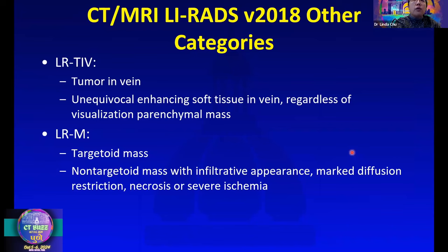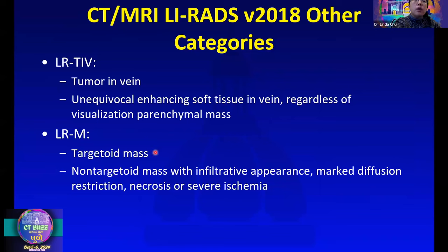There are also special categories in LIRADS 2018, including LR-TIV, which means tumor in vein. That refers to unequivocal enhancing soft tissue in the vein, regardless of whether we can see a parenchymal mass. There is also the LR-M category, which is suspicious for metastatic disease, and these can look like the classic targetoid mass or a non-targetoid mass with infiltrative growth appearance.